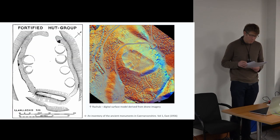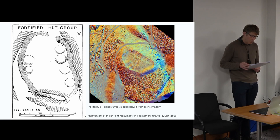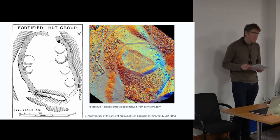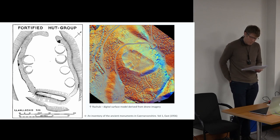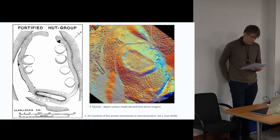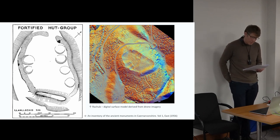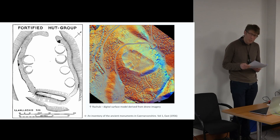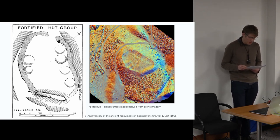Walking over the earthworks, we found it difficult to reconcile them with the 1950s Royal Commission plan. The features were indistinct in places. What was a built platform? What was the natural lie of the land? Yet one line of reasoning went: if we create a surface model using the drone imagery, the distinctions need not be made now. We can defer the decisions and the interpretations to later.